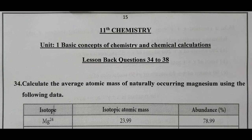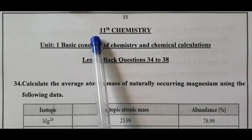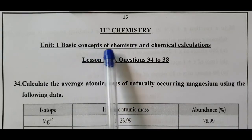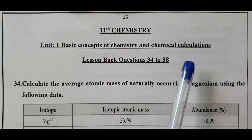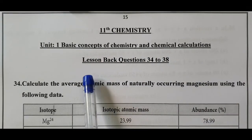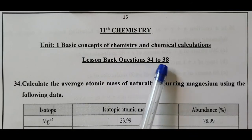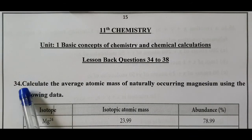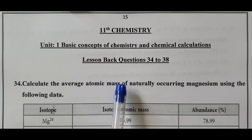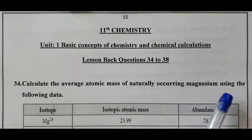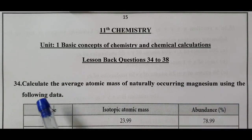Peace be unto you and your family. 11th chemistry, Unit 1: Basic Concepts of Chemistry and Chemical Calculations. From questions 34 to 38, calculate the average atomic mass of naturally occurring magnesium using the following data.